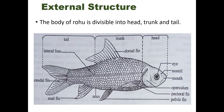Some Rui fish also have thread-like sensory maxillary barbels — tiny hair-like structures. There is a membrane known as the branchiostegal membrane located between the operculum and the body portion. This membrane helps to enclose the gill chamber ventrolaterally with the operculum, thus helping the Rui fish to respire properly.